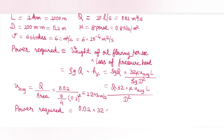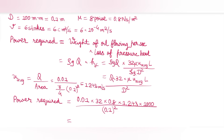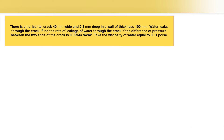Power = 0.01 × 32 × 0.8 × 1.273 × 1000 / (0.1)² = 32588.8 watts = 32.588 kilowatts.